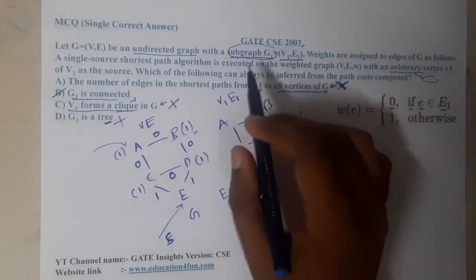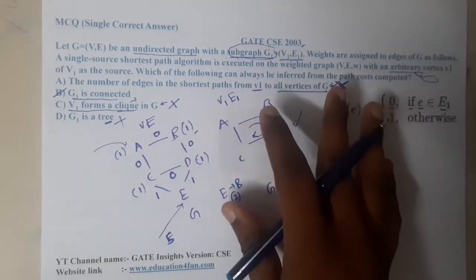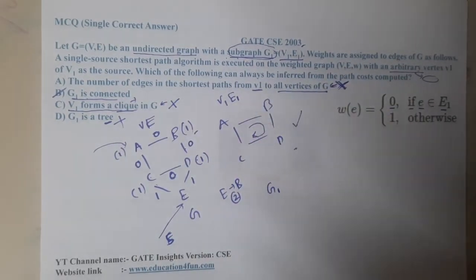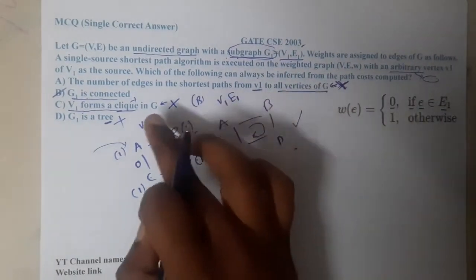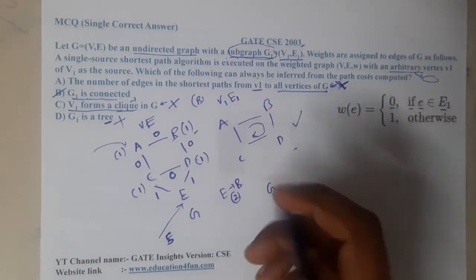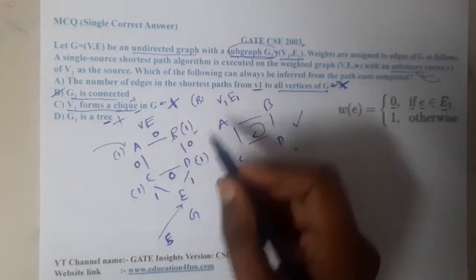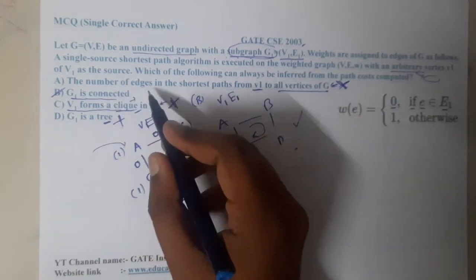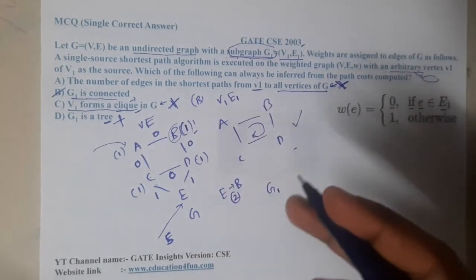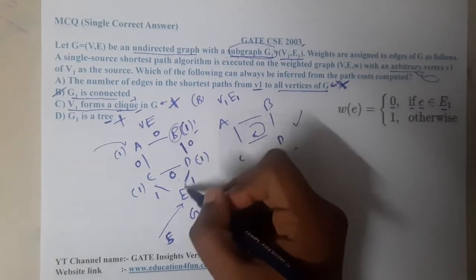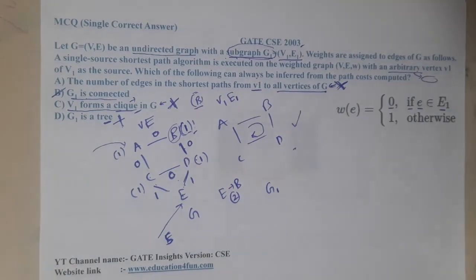The only conclusion we can make is that G1 is connected. The reason is G1 is a subset of G, and since the SSSP is run from a source in V1 with 0-weight edges within G1, the reachable connected part of G1 is confirmed. Options A, C, and D are all wrong for the reasons discussed — clique fails with different source choices, G1 need not be a tree, and path cost doesn't reveal edge count. So B is the correct answer.